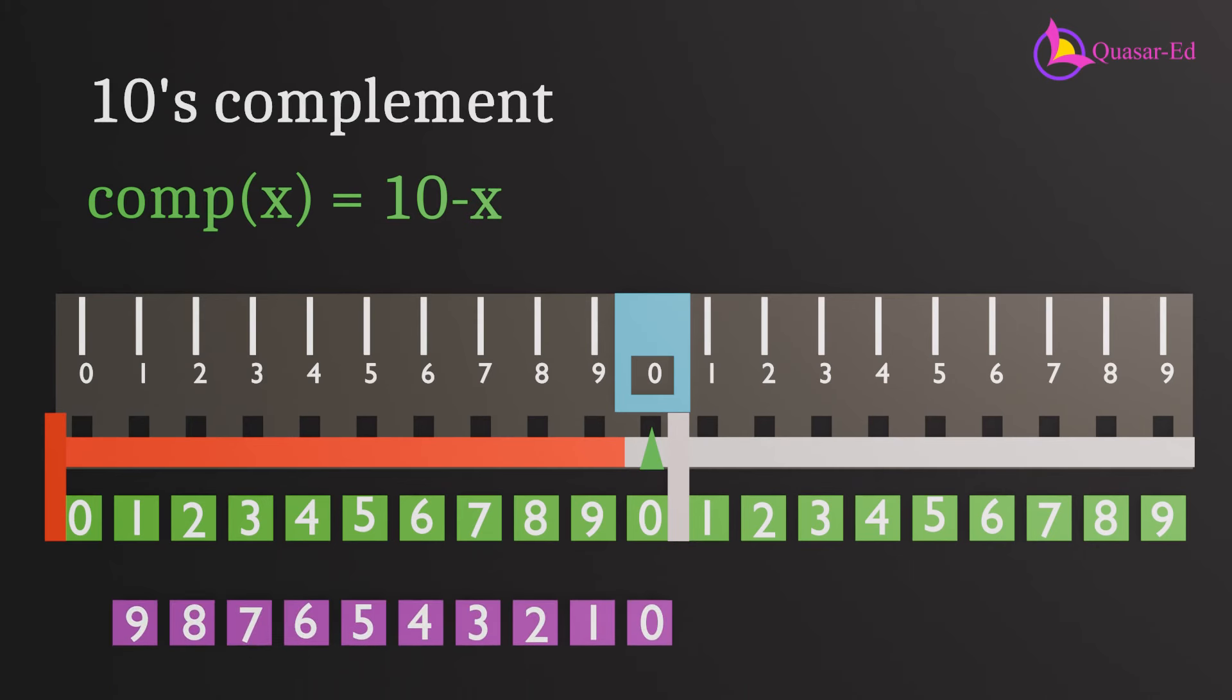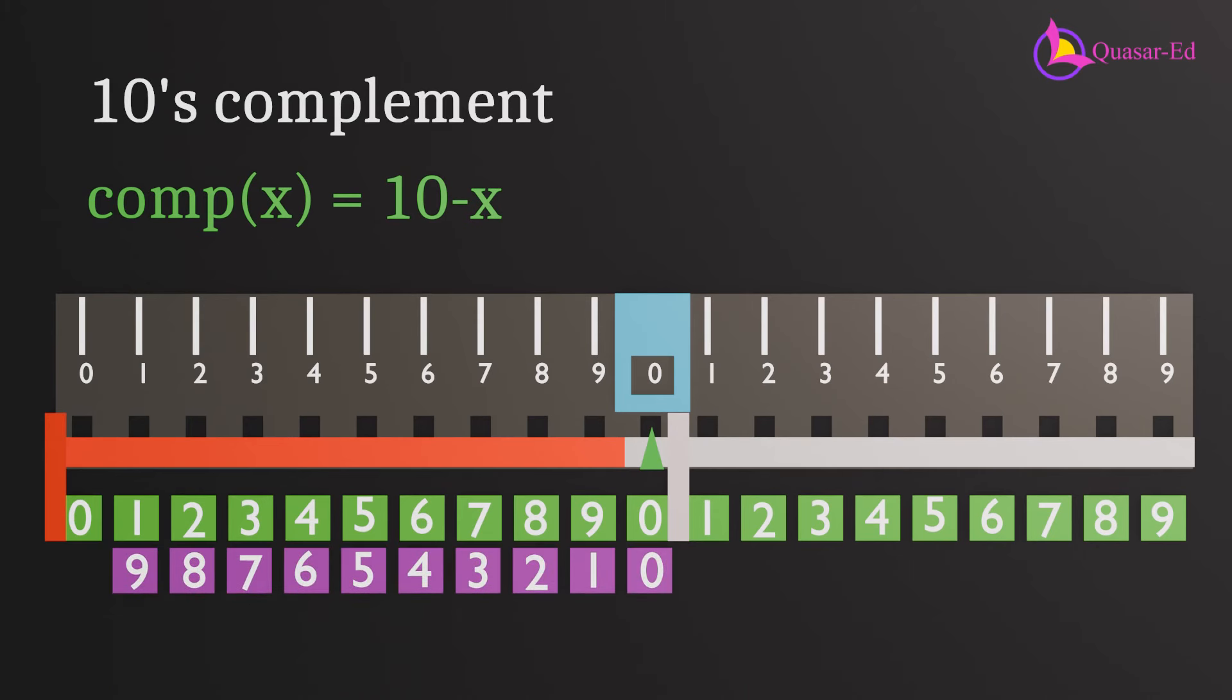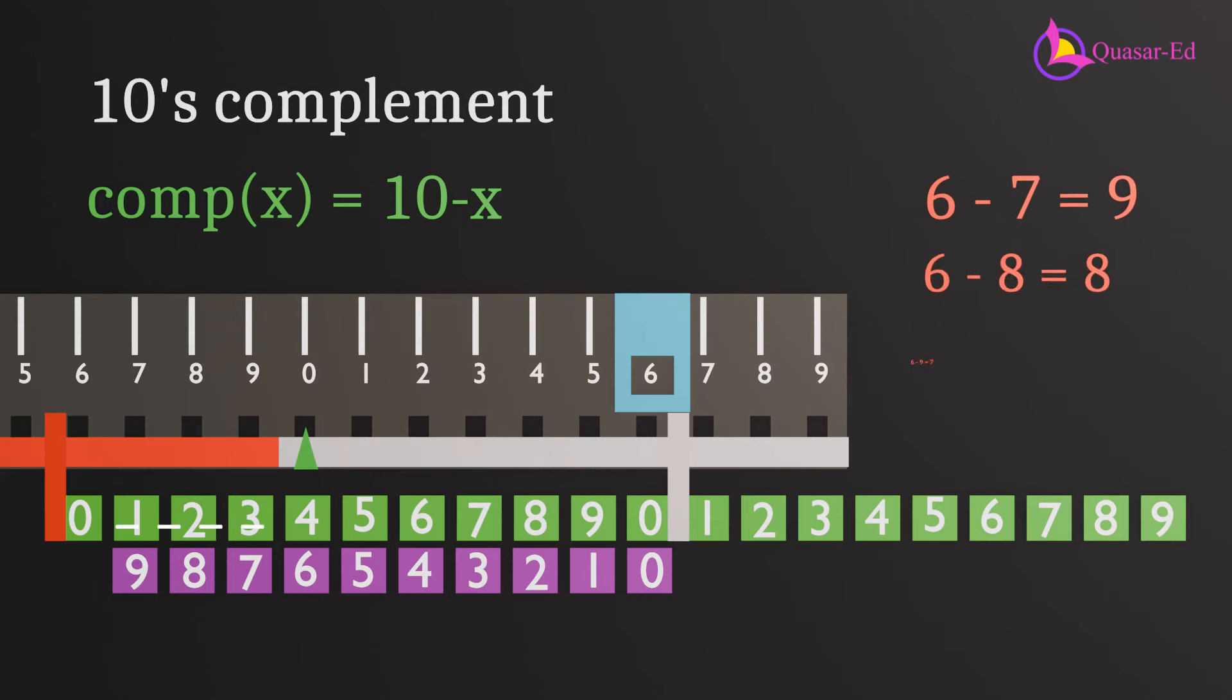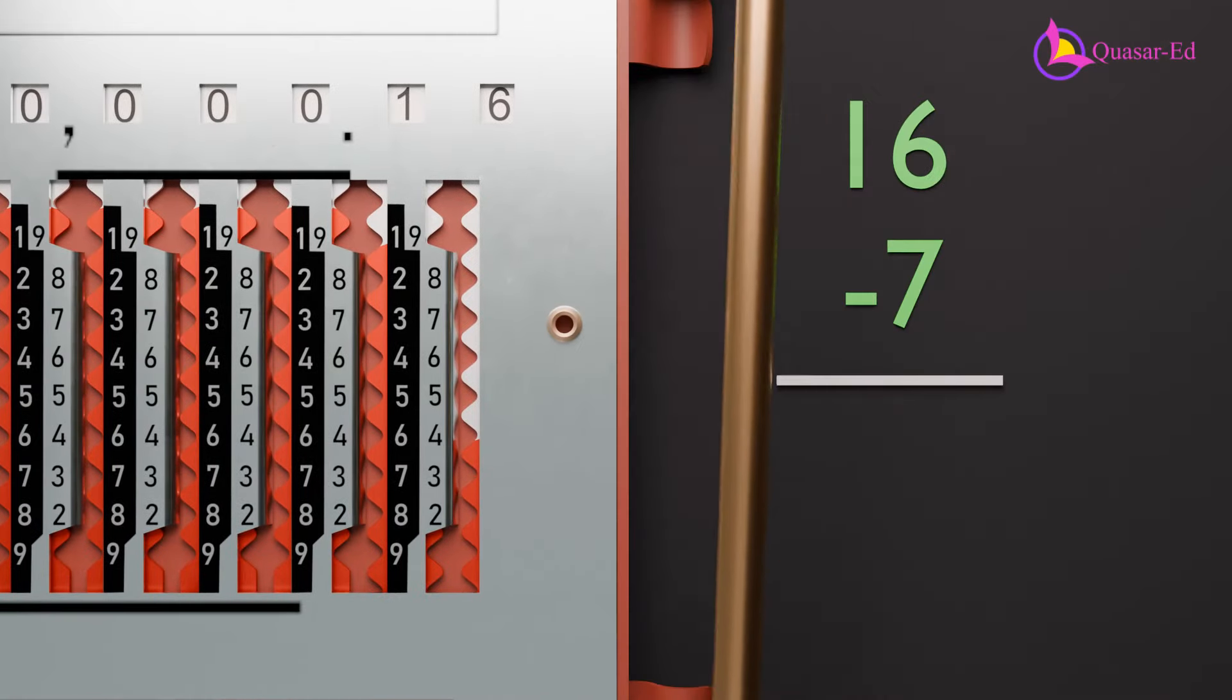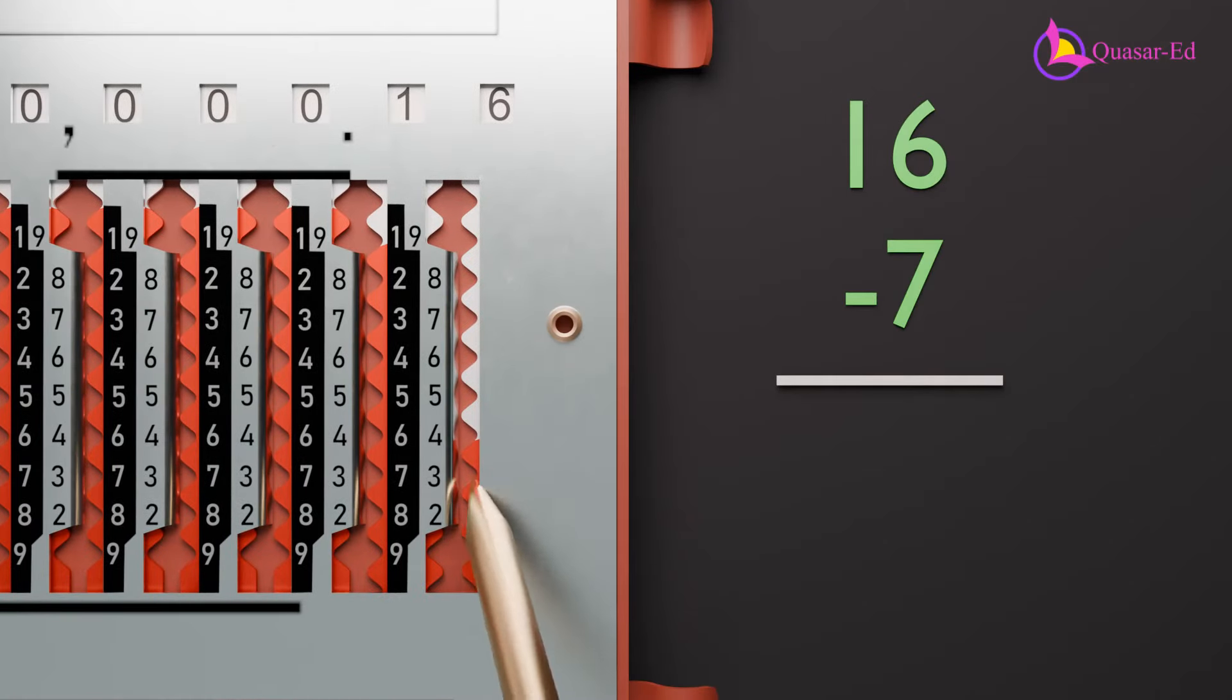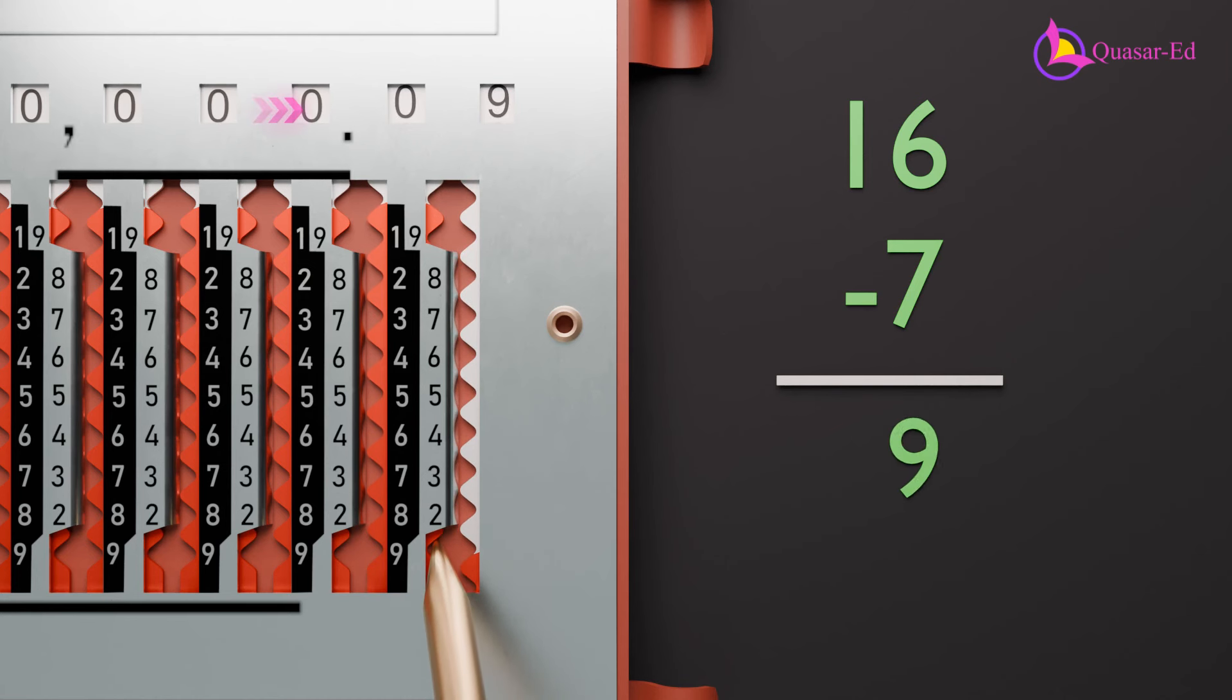To subtract using complements, we simply add the complement numbers next to the addition numbers and use them for subtraction. Subtracting any number in the red section requires borrowing from the left column. Therefore, whenever we need to subtract in the red section, the stylus must shift left and pull up the left column to decrease the number by one.